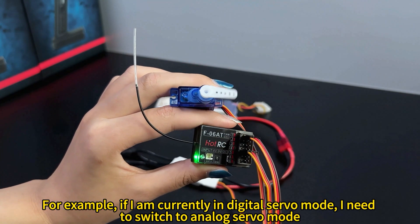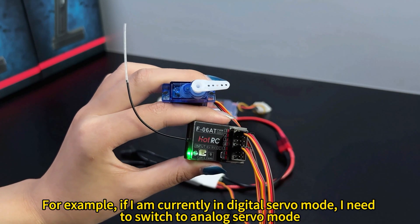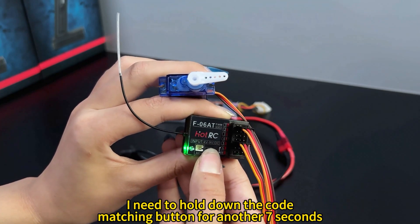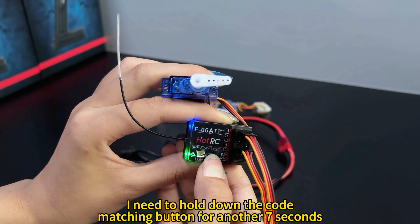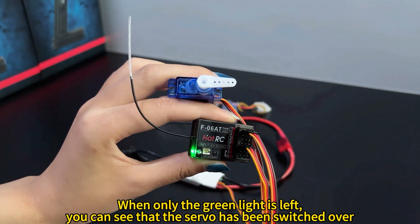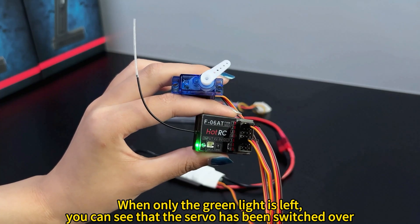For example, if I am currently in digital servo mode, I need to switch to analog servo mode. I need to hold down the code matching button for another 2 seconds. When only the green light is left, you can see that the servo has been switched over.